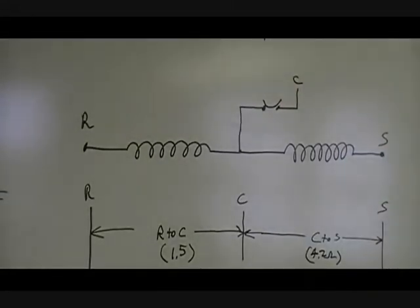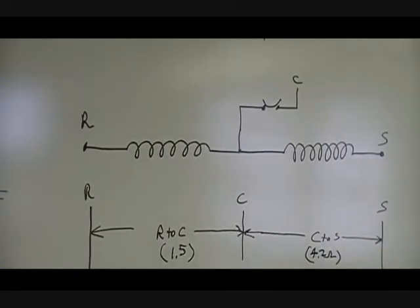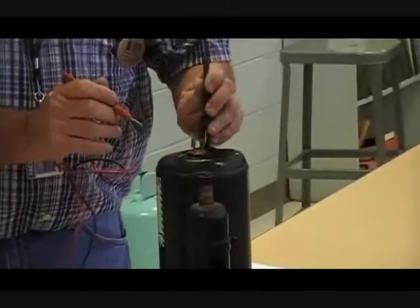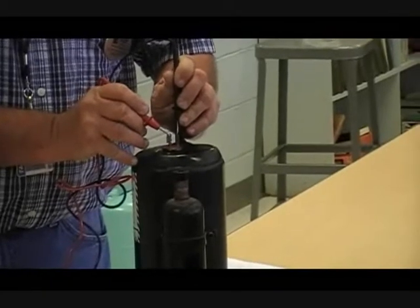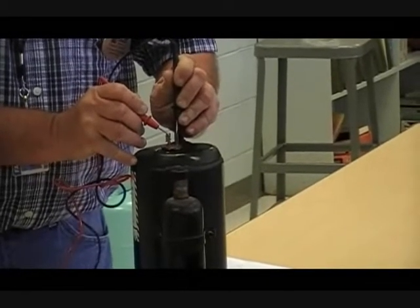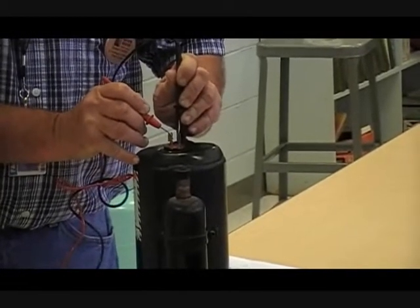We can determine which terminal is which by measuring a compressor. If you'll look at what I'm going to do, I'm going to take a look at my three terminals and I'm measuring the resistance. Here, I have 5.7 approximately.